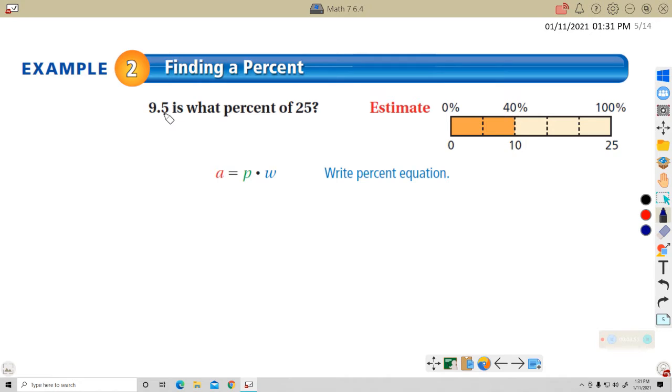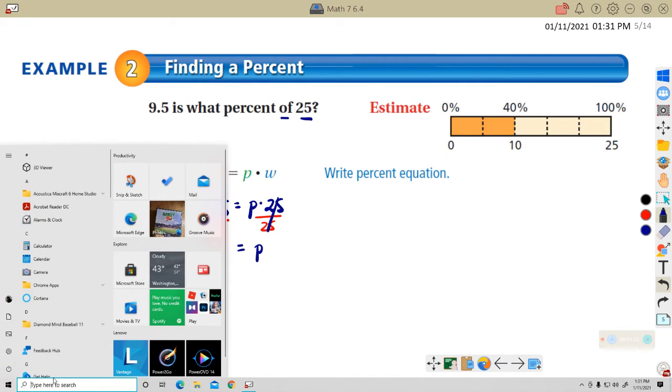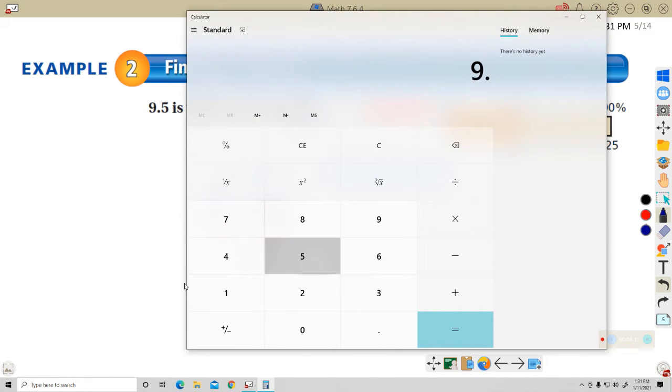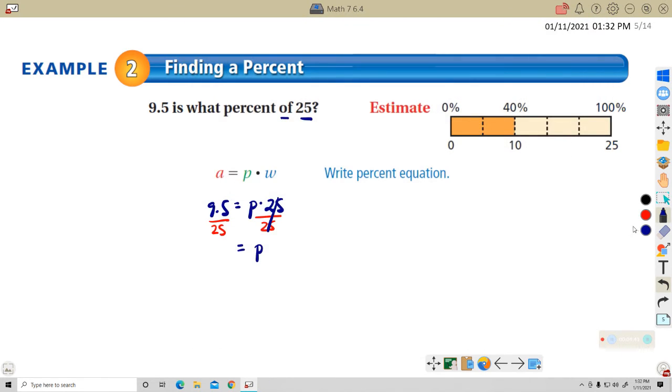Now we're going to find a percent. 9.5 is what percent of 25? The 'of' 25 tells us that goes here. 9.5 is the part. So 9.5 equals P times 25. To solve for P, I divide both sides by 25. 9.5 divided by 25 equals 0.38. Now remember, this is in decimal form, but they're asking about what percent. So the answer here is 38%.